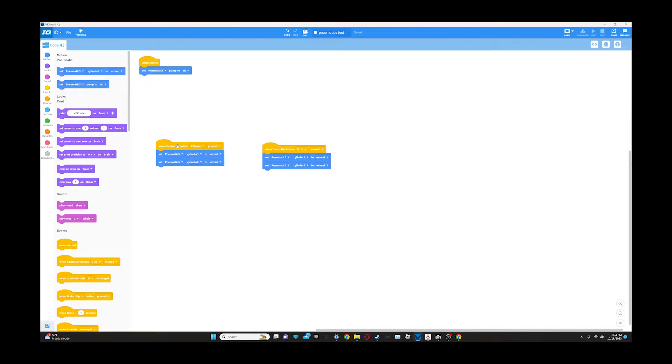So then what we did was we brought out the block. When controller buttons are up pressed, then the cylinder one and cylinder two extend. And then when R down is pressed on the controller, cylinder one and cylinder two will retract. So it's pretty simple as far as coding them.